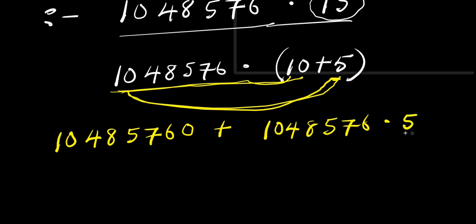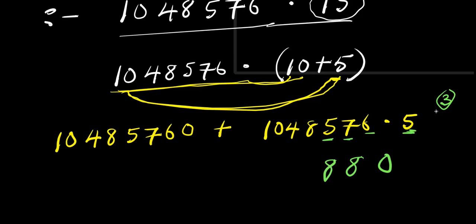Let's multiply 1,048,576 times 5. 5 times 6 is 30, carry 3. 5 times 7 is 35, plus 3 is 38, carry 3. 5 times 5 is 25, plus 3 is 28, carry 2. 5 times 8 is 40, plus 2 is 42, carry 4. 5 times 4 is 20, plus 4 is 24, carry 2. 5 times 0 is 0, plus 2 is 2. 5 times 1 is 5. So, 1,048,576 times 5 is 5,242,880.